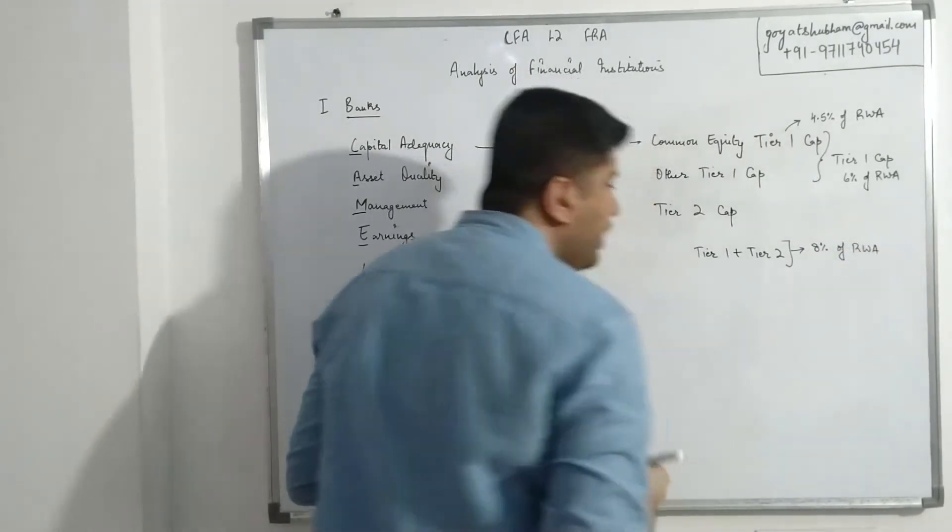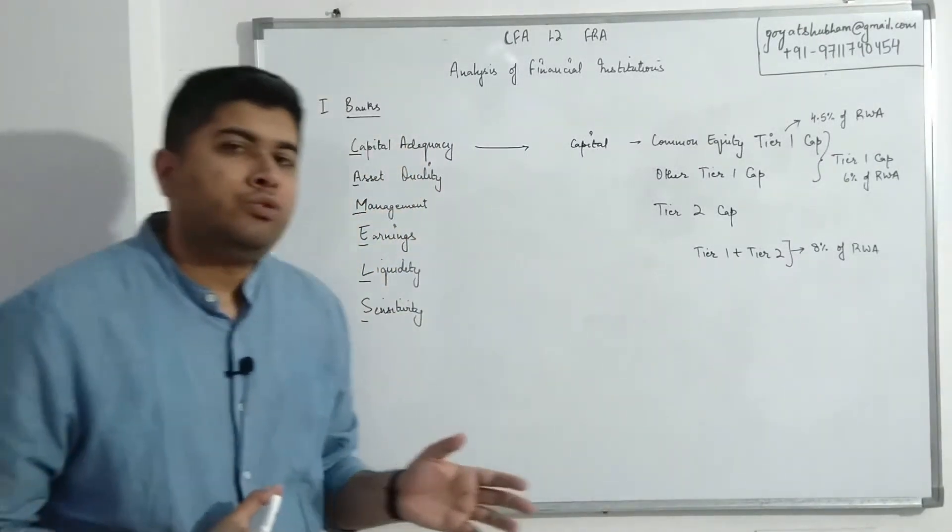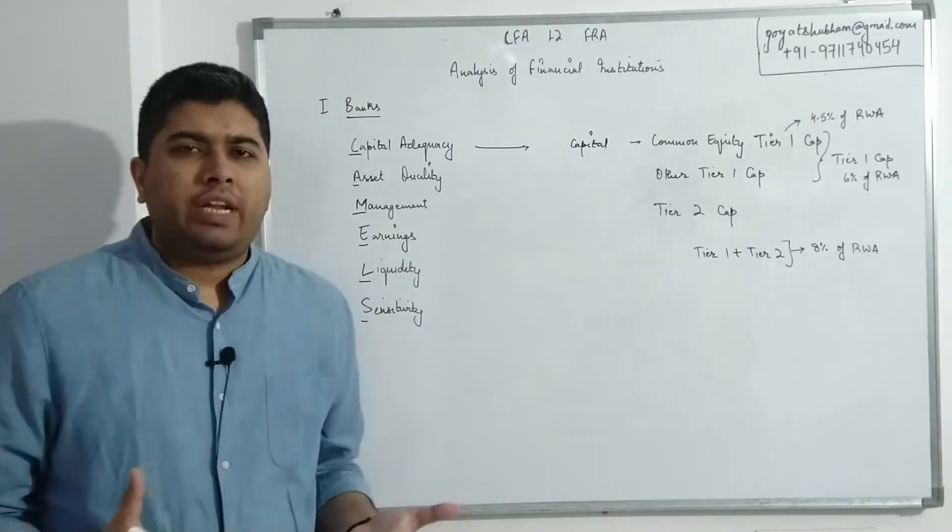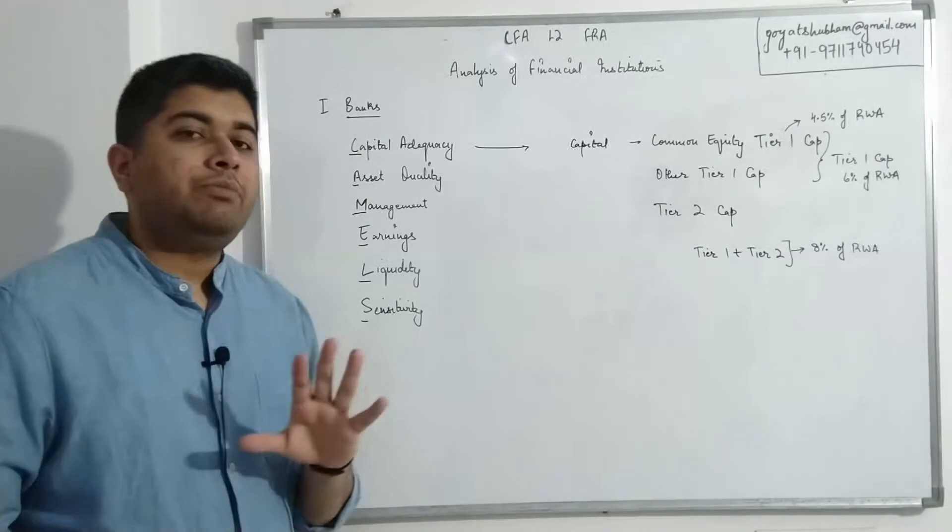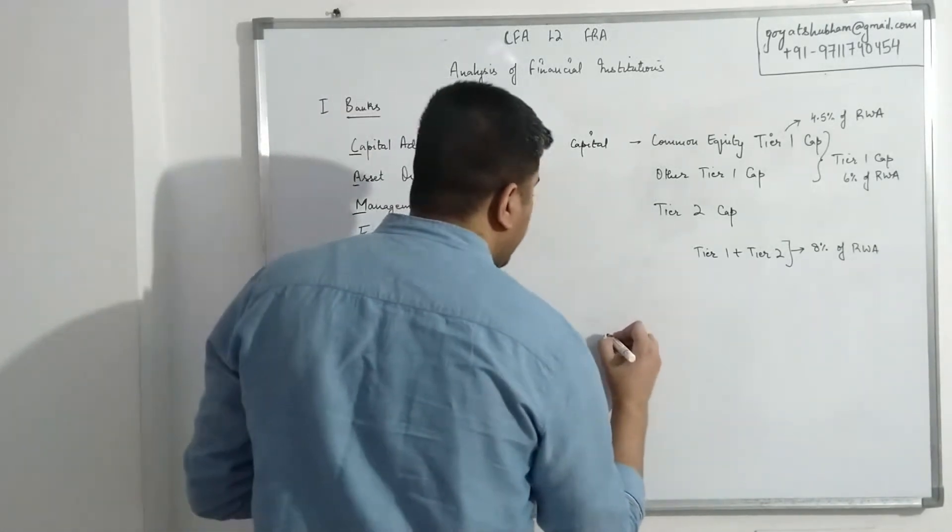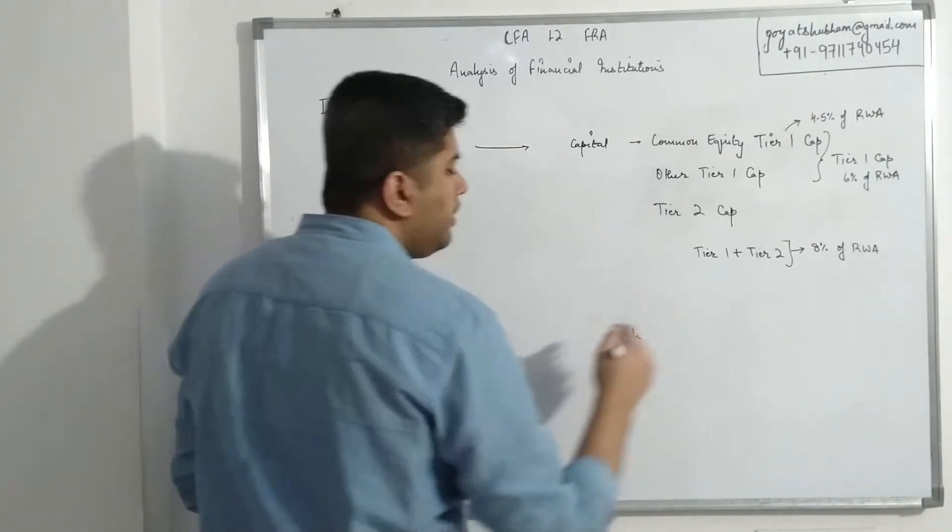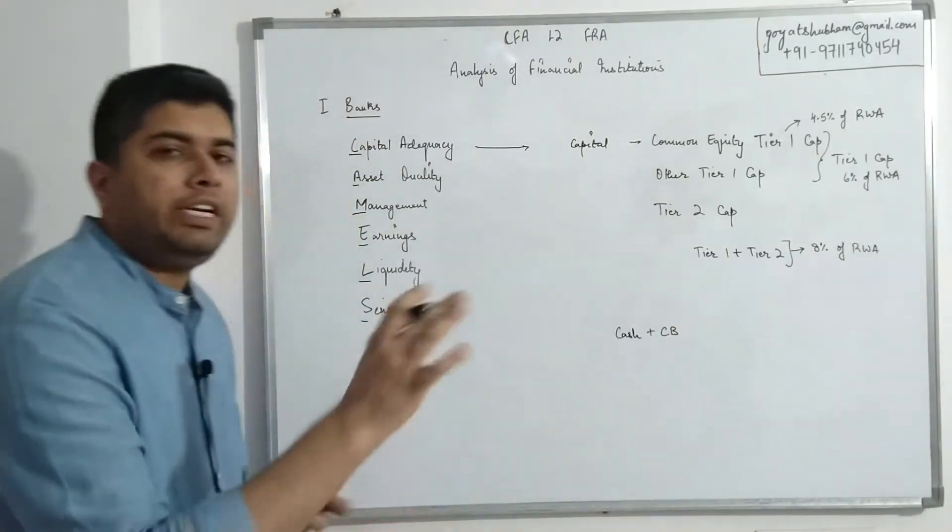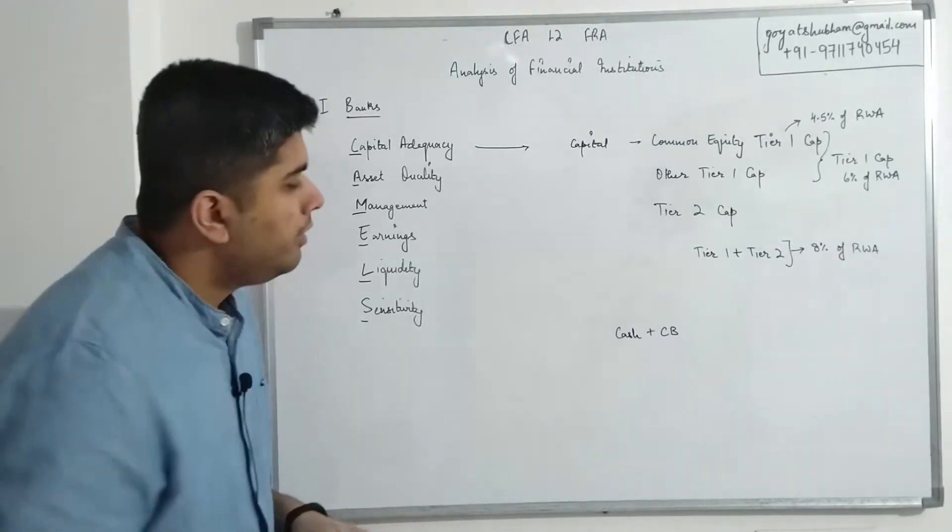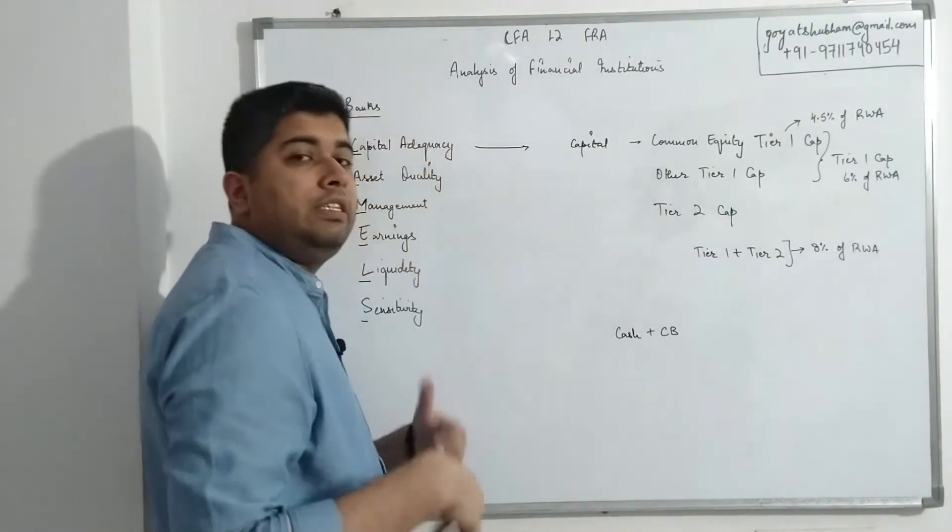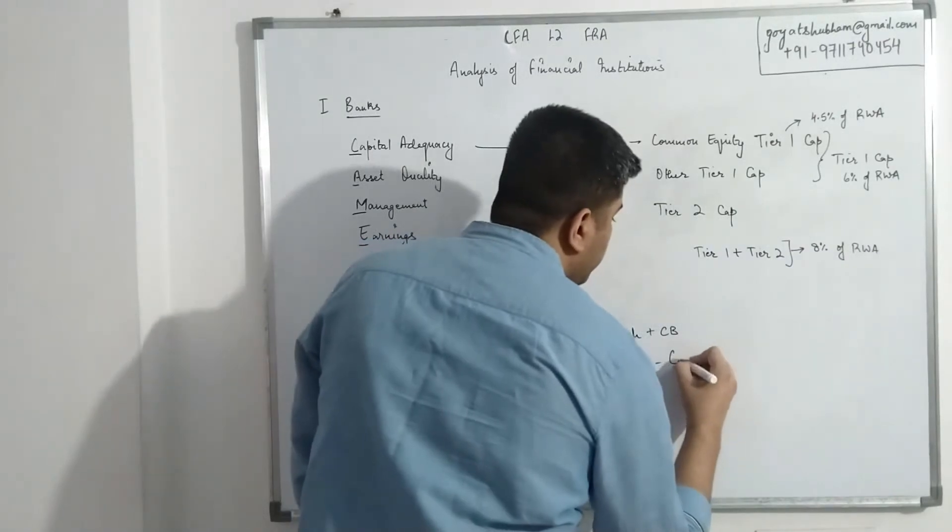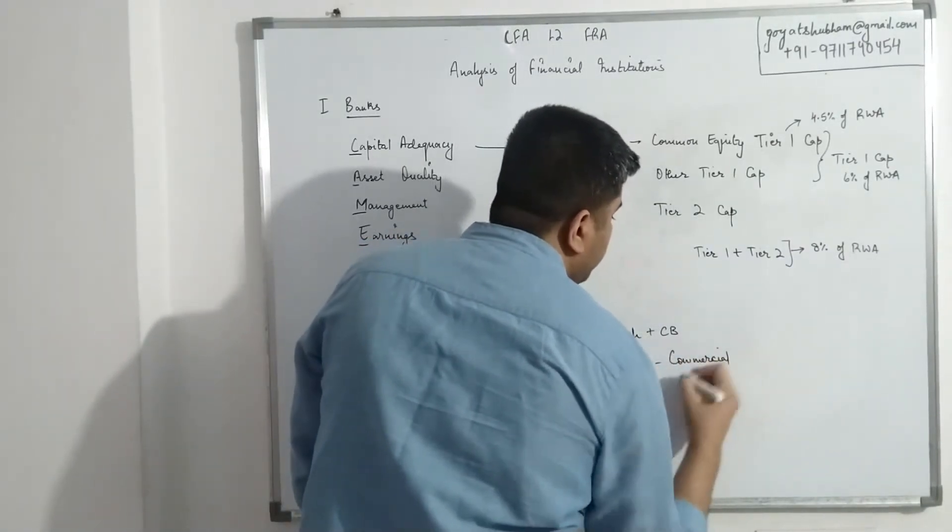Then total capital, which means Tier 1 plus Tier 2, this should be at least 8% of risk-weighted assets. Now the new term that we are introduced to is risk-weighted assets. What exactly are those? Well, unlike a normal business, for a normal business machine, land and building all of these are assets. But when we talk about banks, banks have something unique in that sense that for banks the assets are loans.